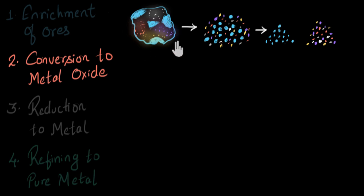We have the zinc ore over here. In the first step, enrichment of the ore, we crushed it into pieces and we separated the zinc compound from the impurities. Now, this zinc compound happens to be zinc sulfide.